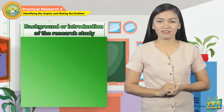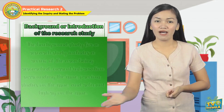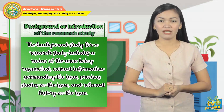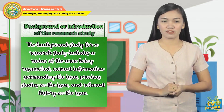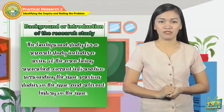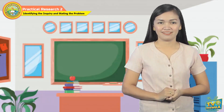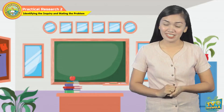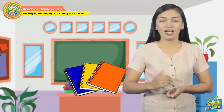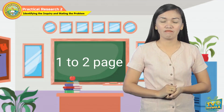What is the background of the study all about? The background of the study for a research includes the review of the area being researched, current information surrounding the issue, previous studies on the issue, and relevant history on the issue. The following are the ways on how to describe the background of the research. In your study notebook, let's expand the research topic and title you did in the previous activities by composing a one to two page background of the study.